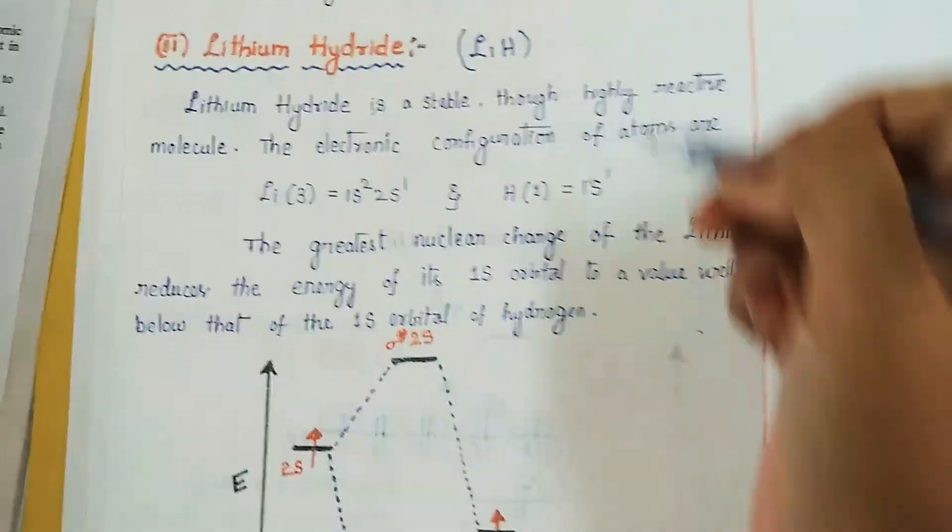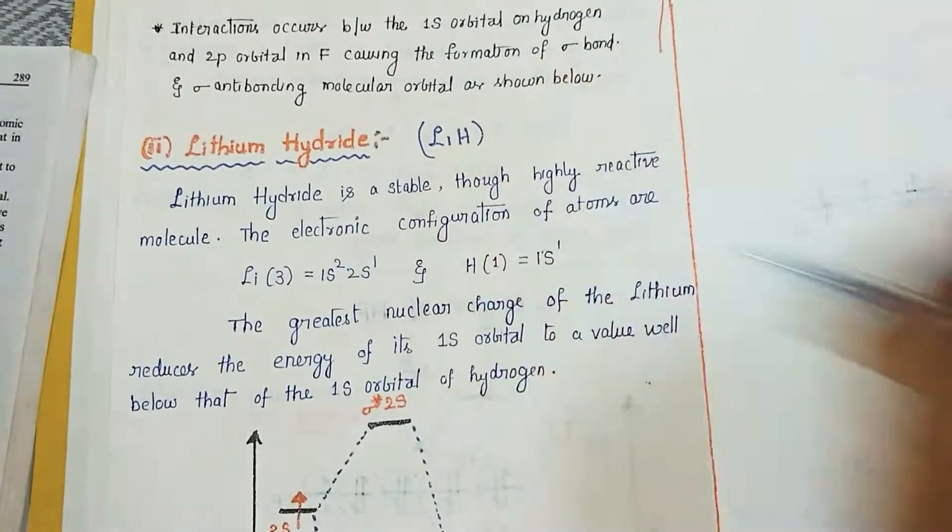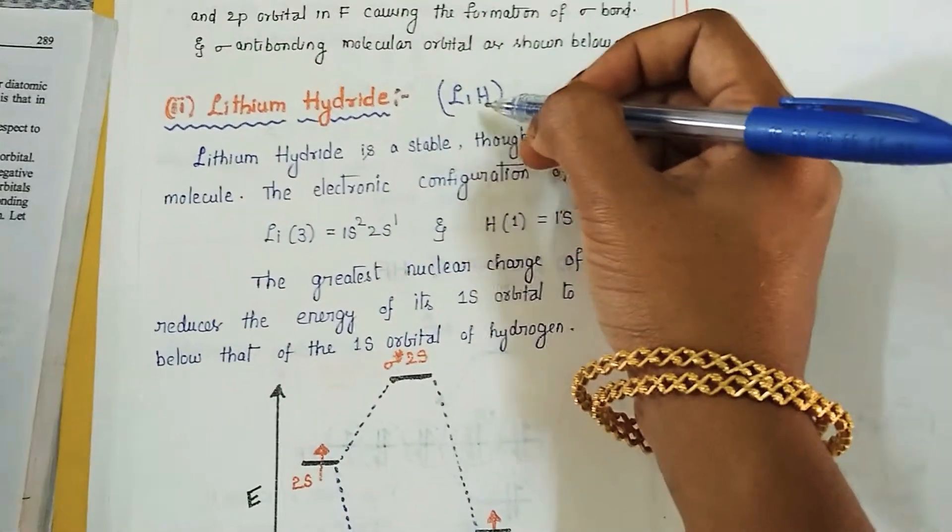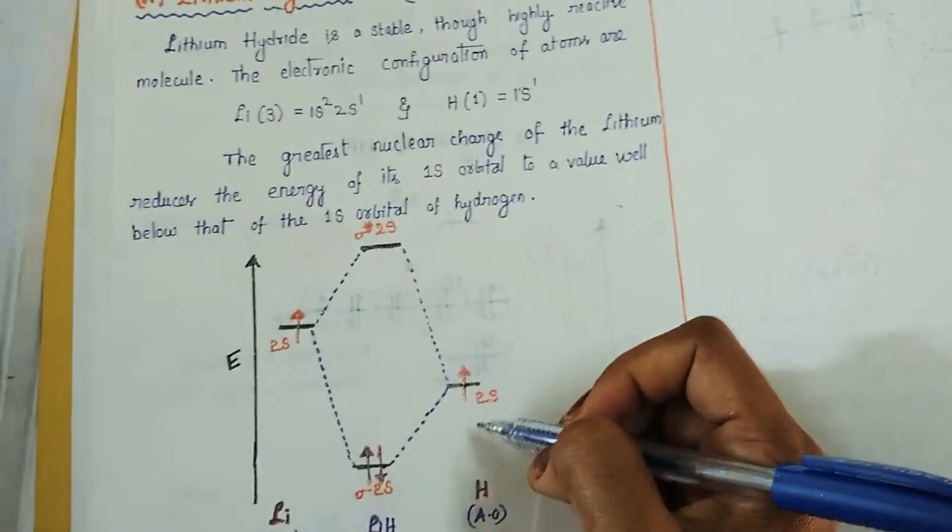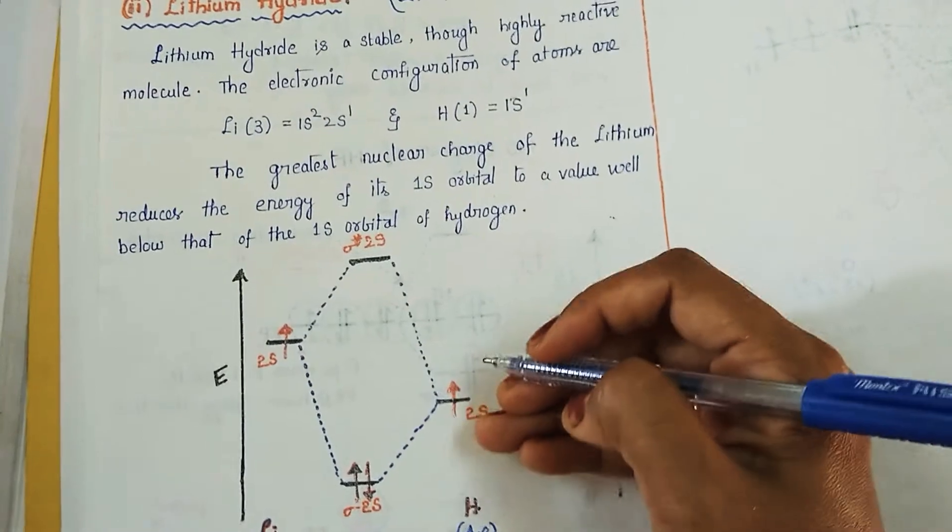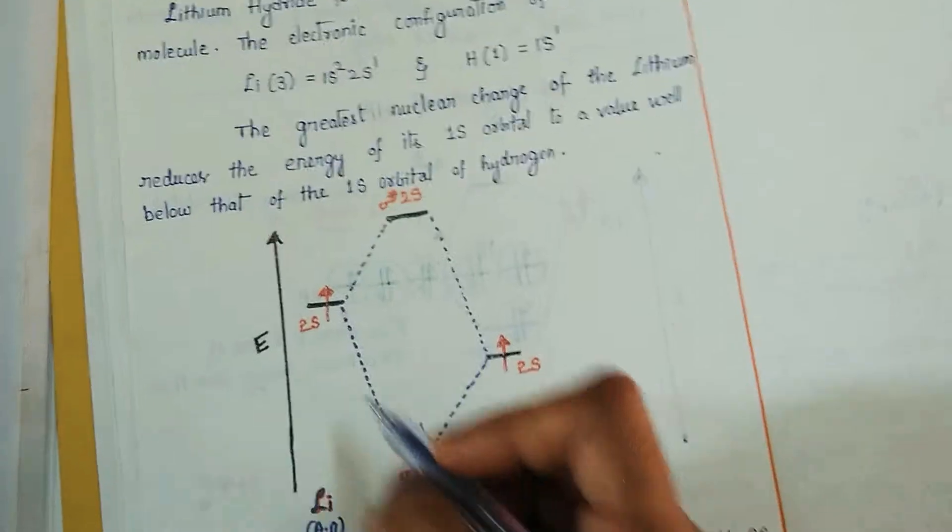Among lithium hydride, which is having more electronegativity? Lithium is the most electropositive element and hydrogen is less electropositive than lithium. That's why the one which is having high electronegativity will have lower atomic orbital energy. That's why we are writing hydrogen below and lithium will be above.